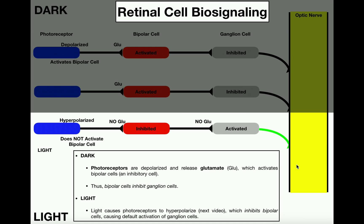Some of this, particularly with the photoreceptor cell, seems backwards, but it's very important that you learn it this way. At this point you should understand how these cells activate or inhibit in series, and understand that to perceive light we need an activated ganglion cell — because its axons are continuous with the optic nerve, which goes toward the brain.